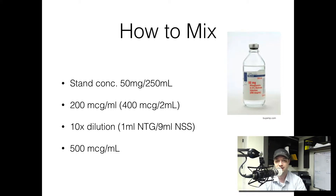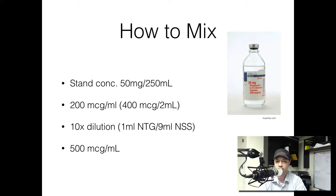So you're going to cause a 10-fold dilution. You're going to give 1 ml of nitroglycerin and 9 ml of normal saline — just a normal flush, 10 cc's: 1 ml out of the vial, 9 ml of normal saline. That's going to give you 500 micrograms per milliliter.